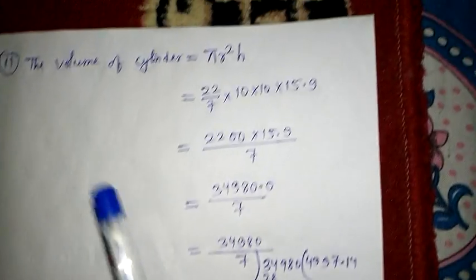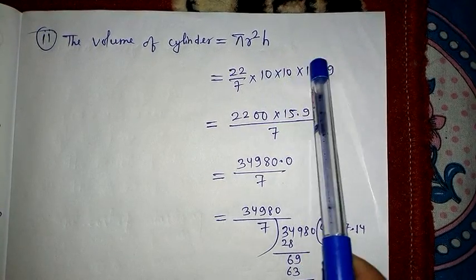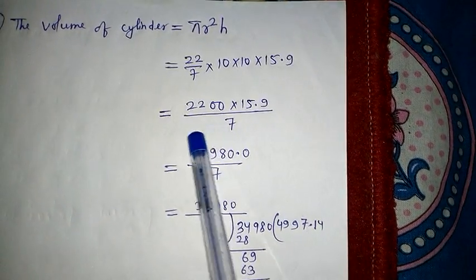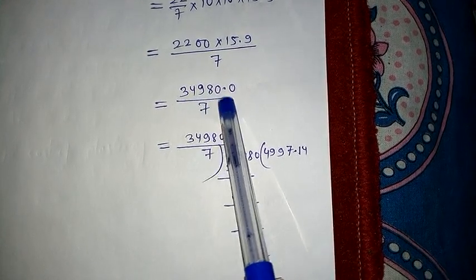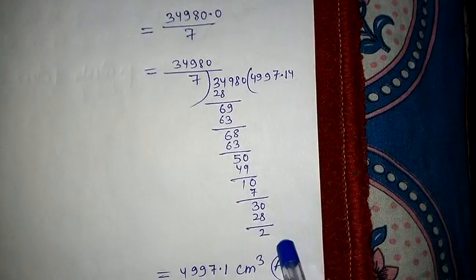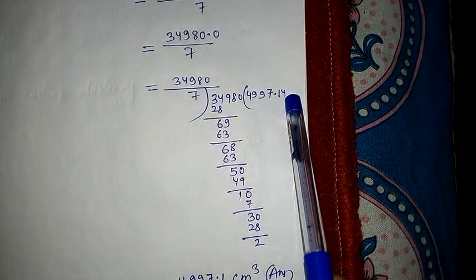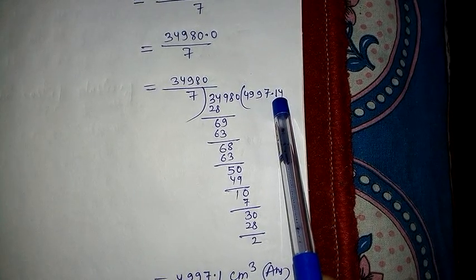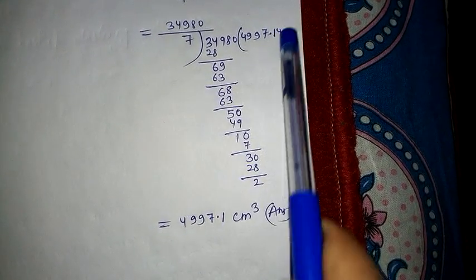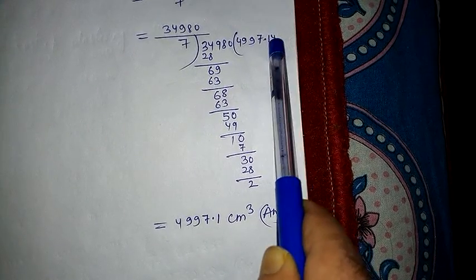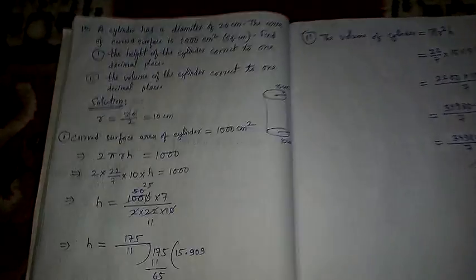Now the second part is to find the volume. Volume = πr²h = (22/7) × 10 × 10 × 15.9. After multiplying, we get 34980/7. After dividing, we get 4997.14. Since one decimal place is required, the digit 4 (less than 5) means 1 remains as 1. So the answer is 4997.1 centimeter cube. These rounding concepts were also taught in class 9. From this video, learn and do some more questions. Thank you children.